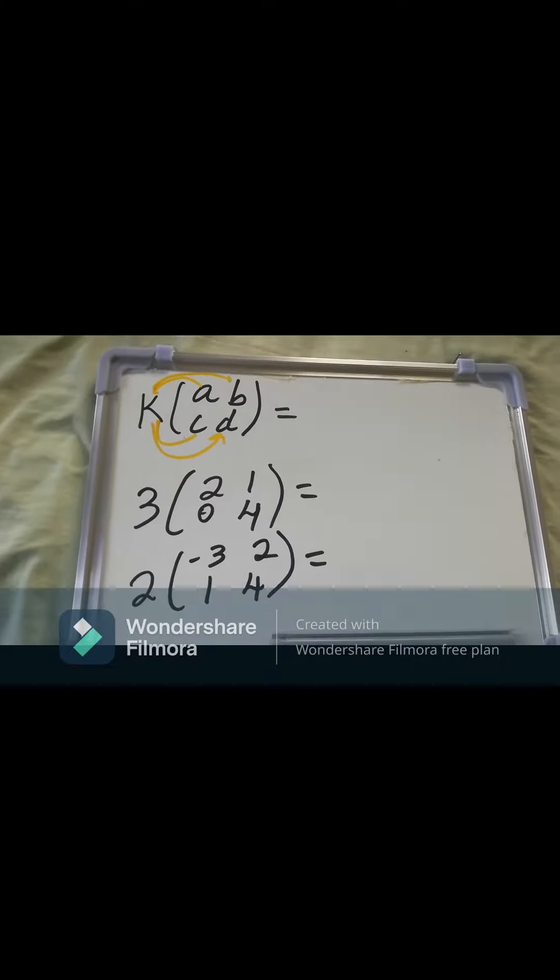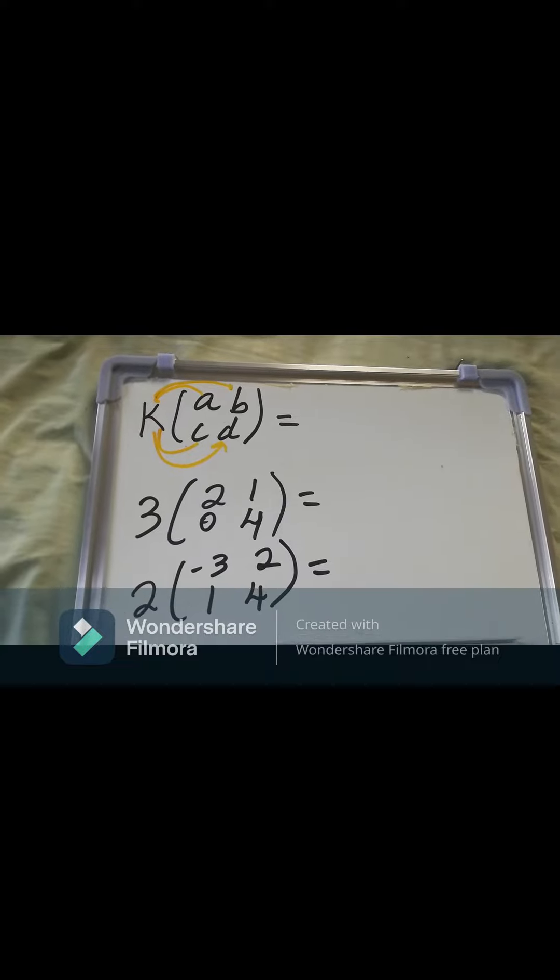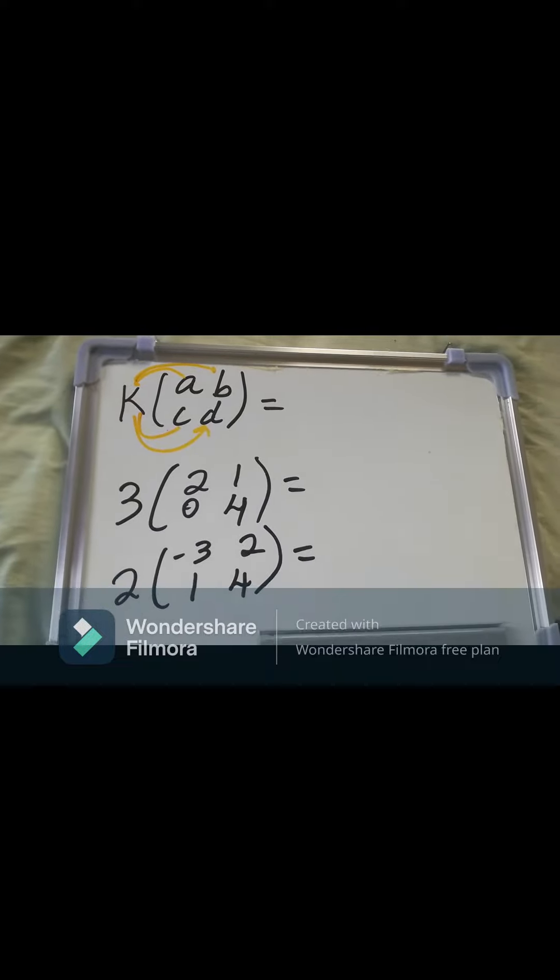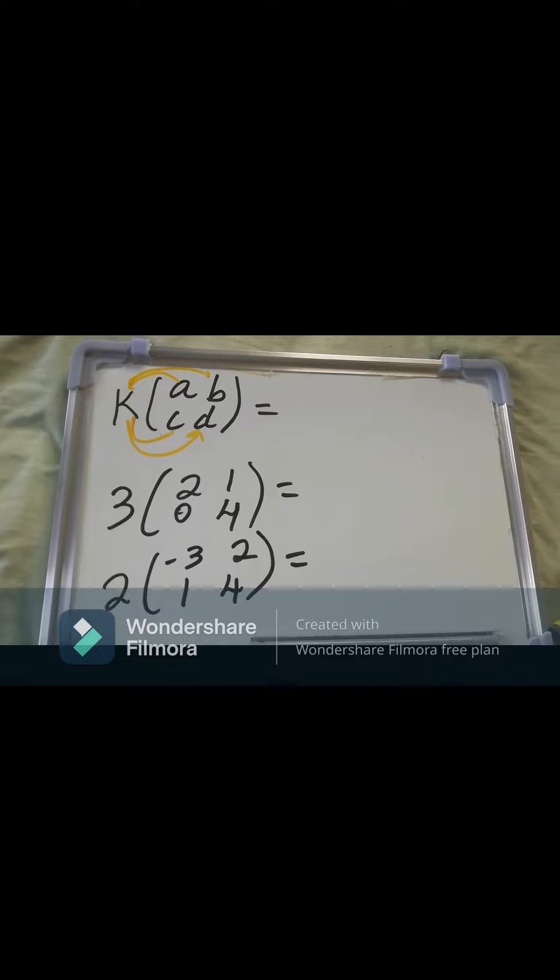So when we multiply K by A, we get KA. K by B, KB. K by C, KC. And K by D, KD.